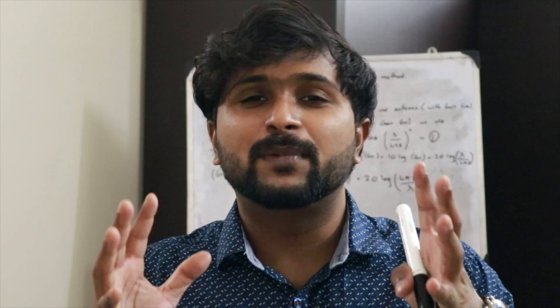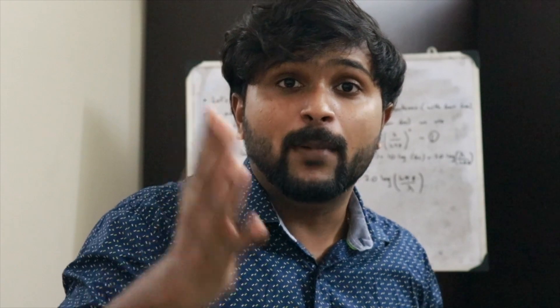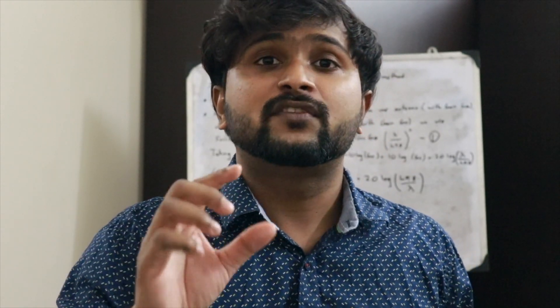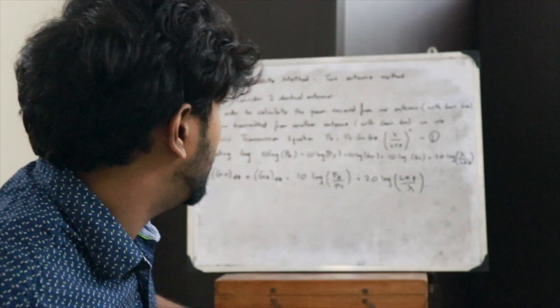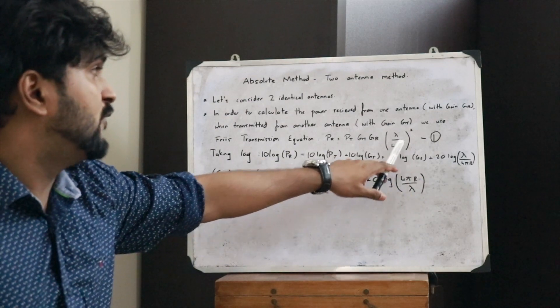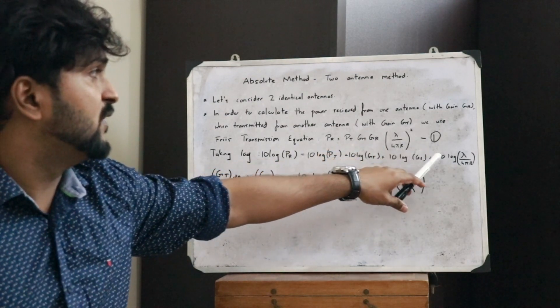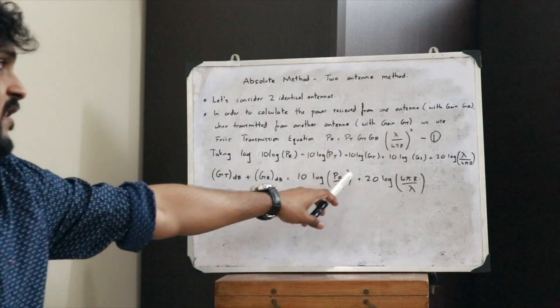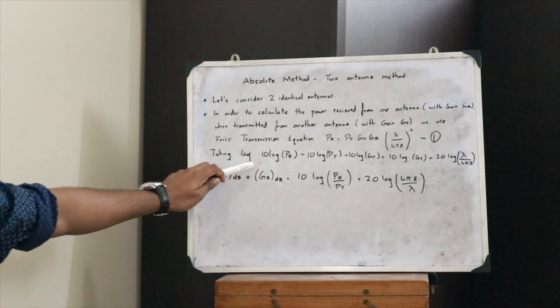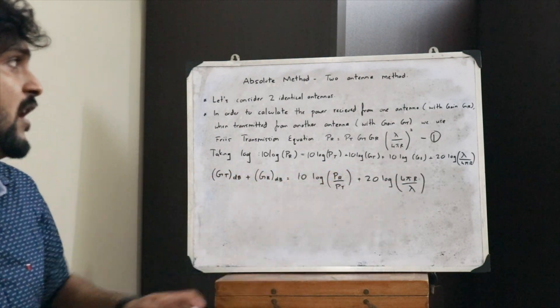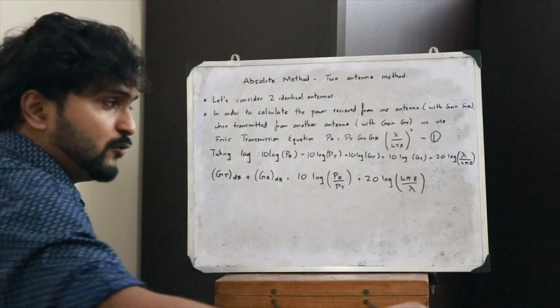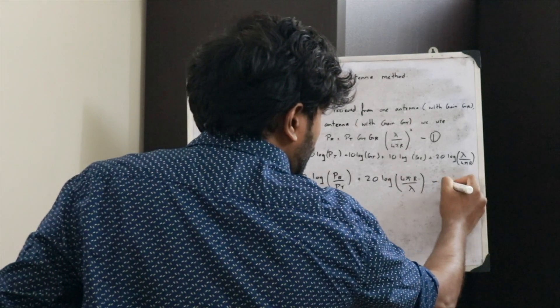We get this because of the basic logarithm rules: log(ab) = log a + log b, log(a/b) = log a − log b, and log of something squared equals twice the logarithm of that value. That is how the squared term becomes 20 log(4πr/λ). Let us take this rearranged expression as equation 2.